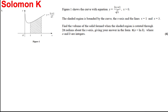Here's another integral question about the volume of revolution. We've got a curve (3x+1) over the square root of x, for x greater than 0. The shaded region is bounded by the lines x=1, x=3, the x-axis, and the curve. Find the volume of the solid when the region is rotated 2π — that just means rotated 360 degrees — about the x-axis. Give your answer in the form π(a + ln b) where a and b are integers.